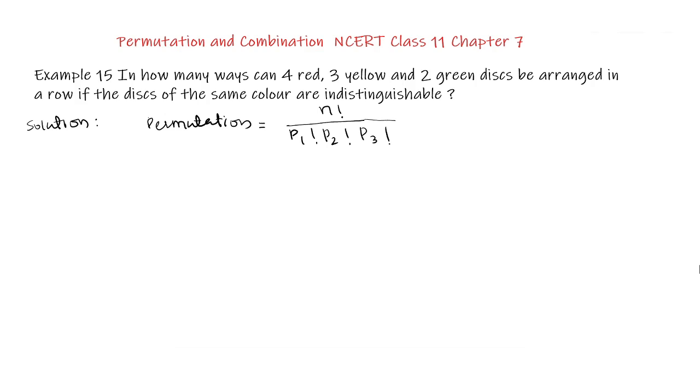p1 are the number of items of one kind, p2 is the number of the items of second kind and p3 is the number of the items of third kind. Here there are 4 red, 3 yellow and 2 green disks.